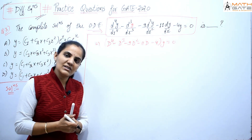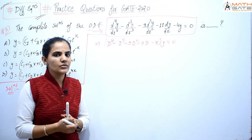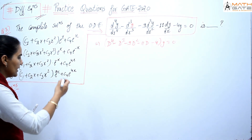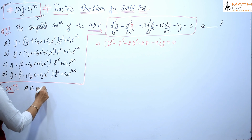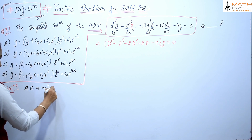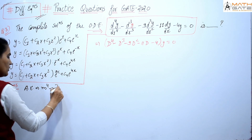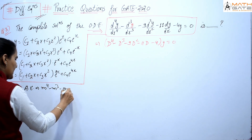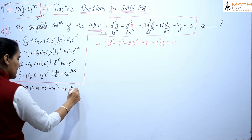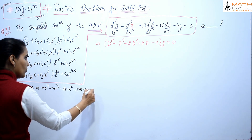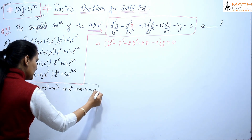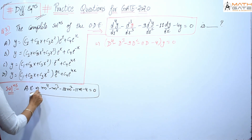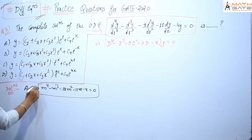To solve this, we use the auxiliary equation. The auxiliary equation is m⁴ minus m³ minus 9m² minus 11m minus 4 equals 0. This is a degree-4 polynomial equation.